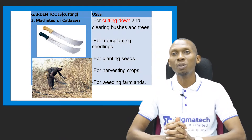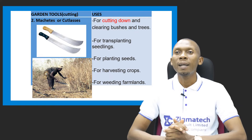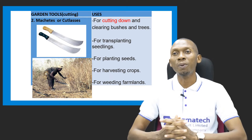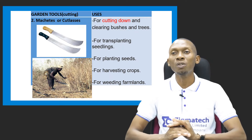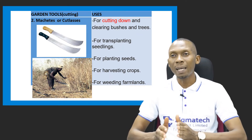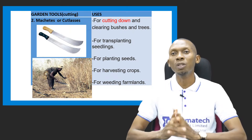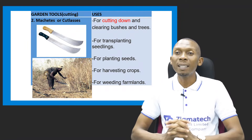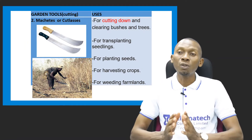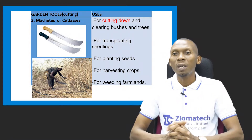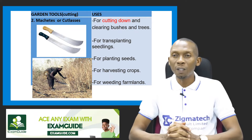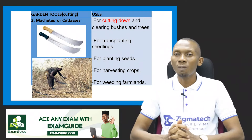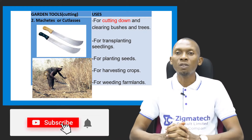We have another garden tool which is a cutting tool called the matchet or cutlass. It is used for cutting down and clearing bushes and trees, which is a pre-planting farming activity. It can also be used for transplanting seedlings from the nursery into the main field, for planting seeds directly on the field, for harvesting matured crops, and for weeding the farm.